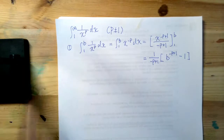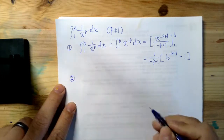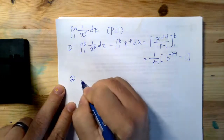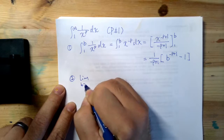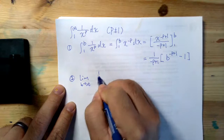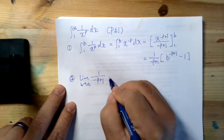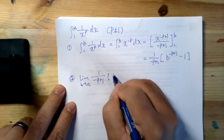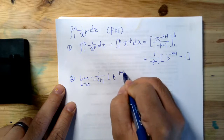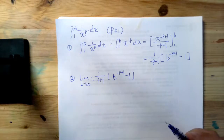We're going to complete the first task. And then second, we're going to take the limit as b goes to infinity applied to this result, which is one over negative p plus one, times b to the power of negative p plus one minus one. We're going to evaluate this limit.